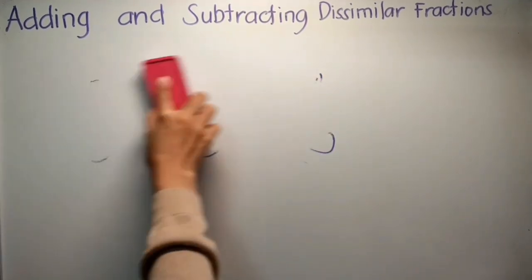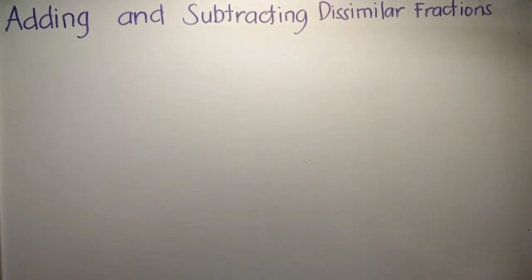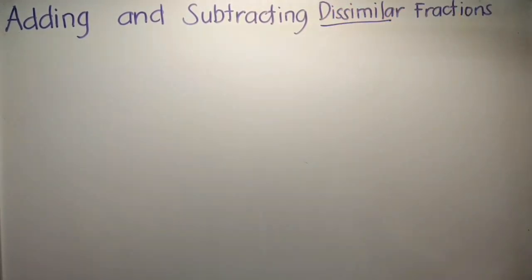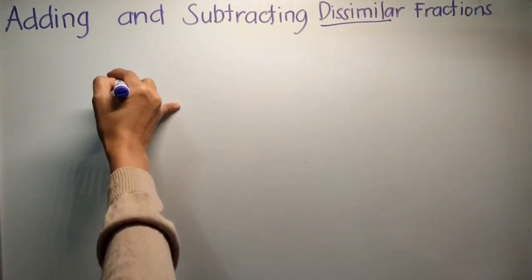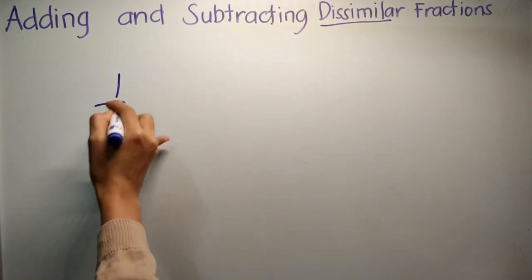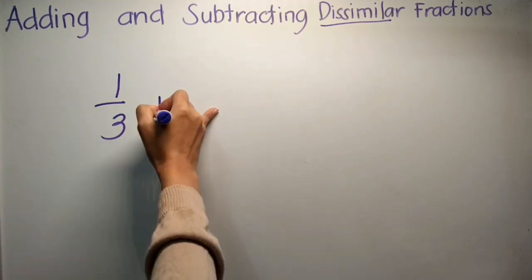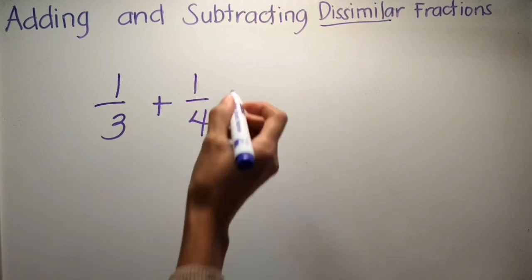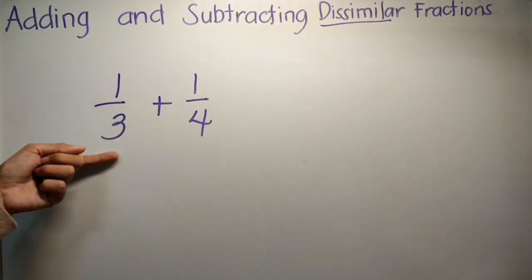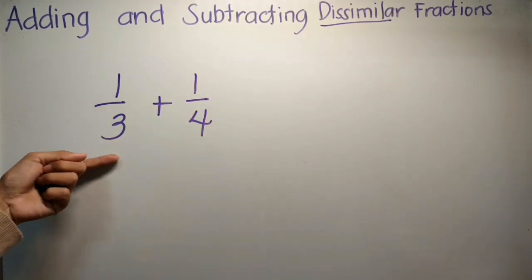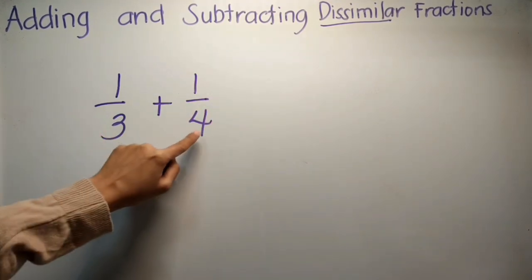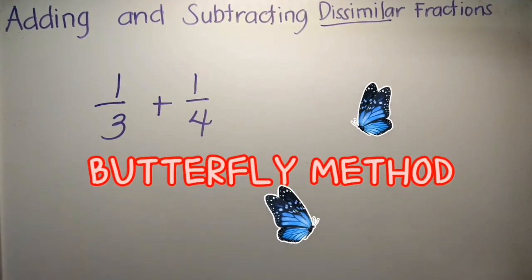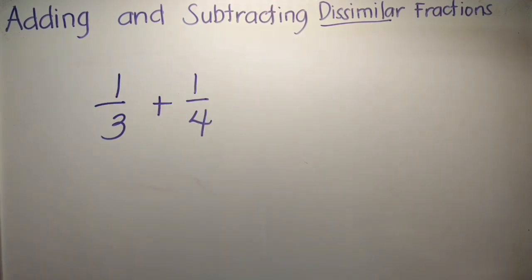Pero paano naman, teacher, kapag ang fraction natin ay dissimilar fractions? So halimbawa, 1 third plus 1 fourth. Obviously, ang kanilang denominator ay magkaiba — 3 at saka 4. Ang pangalan ng method na ito is butterfly method.